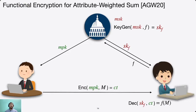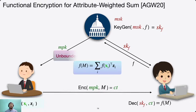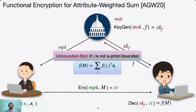In this paper, we construct a functional encryption scheme for the attribute-weighted sum functionality introduced by AGW20. In this functionality, the message M consists of two parts: a public part x_L and a secret part z_L. During decryption, the decryptor learns the function value: summation over i of f(x_i)^T z_i. If i is not a priori bounded, we call the scheme an unbounded slot scheme.